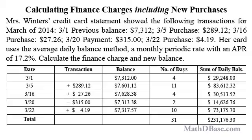First, let's organize the transactions in a table. The date column is self-explanatory. In the transactions column, purchases are added because they increase the amount owed, and payments are subtracted because they decrease the amount owed. The balance column reflects changes in the outstanding balance after purchases and payments. The number of days column indicates how many days a balance amount has remained unchanged, and each entry in the sum of daily balances column is the product of the specific static balance and the number of days it remained unchanged.